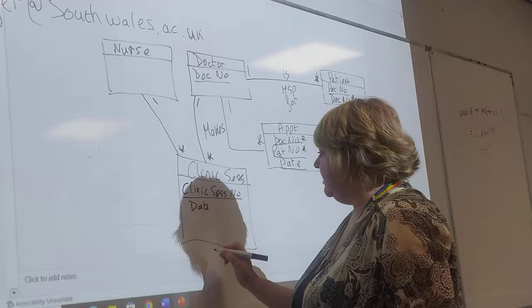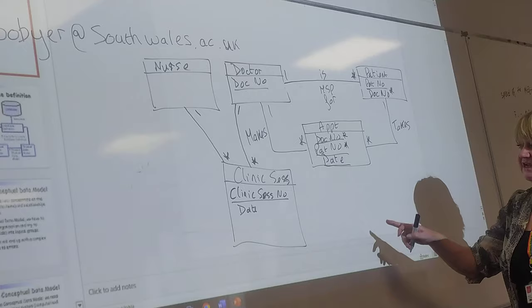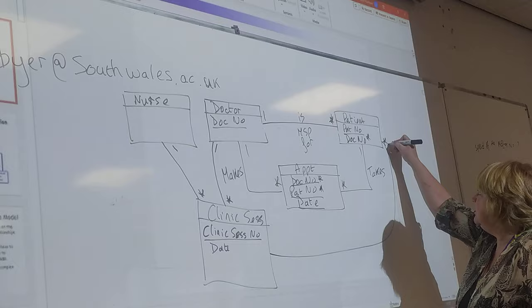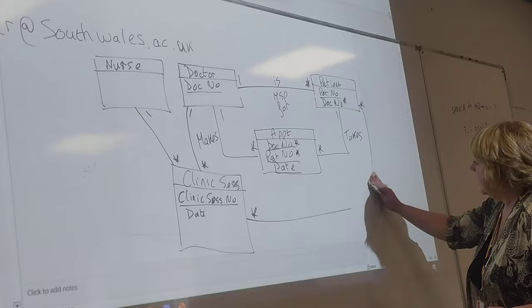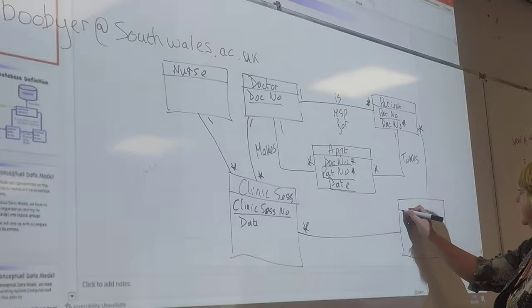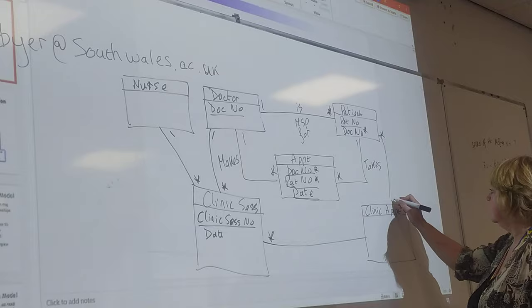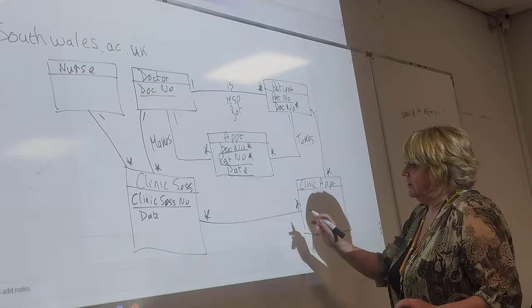Patients attend clinic sessions, so that would be an original many-to-many relationship — 'attends'. We need to decompose it and put in a link entity, which we call 'clinic appointment'. The many ends now go into the link entity, and the original ends now become one.